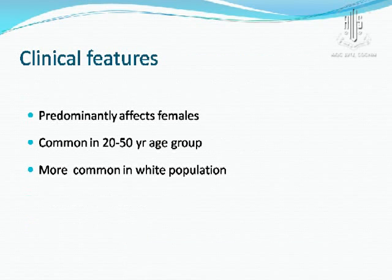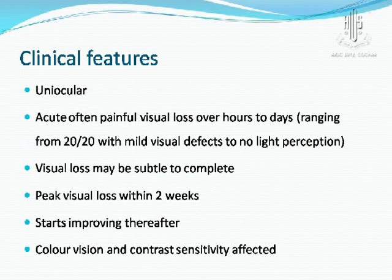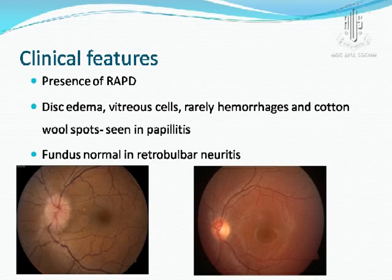Optic neuritis predominantly affects females in the age group of 20 to 50 years and is said to be more common in the white population. The presentation is typically uniocular. Pain develops over hours to days, and visual loss peaks in 2–3 weeks, after which it starts improving. The visual loss may range from very subtle to almost complete, and other visual functions such as colour vision and contrast sensitivity are also affected. Disc edema may be seen or the fundus may appear normal.